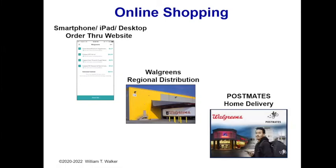Walgreens has to forecast the demand for different kinds of products, make those products, and push them into the push-pull boundary — which is essentially their retail stores. Using the Postmates smartphone application, the customer order is captured and paid for, and then the product is delivered. On a smartphone, iPad, or desktop, you bring up the application, order through the website. Walgreens' regional distribution centers, driven by forecasts, populate popular products in their stores, and then the Postmates delivery system — in some cases by bicycle with a knapsack — goes into the retail store, grabs the inventory, and delivers it to the customer's home.